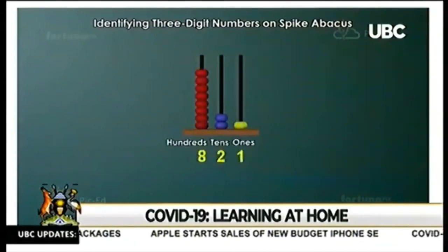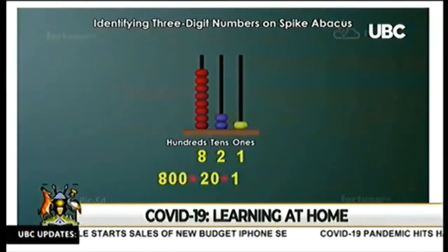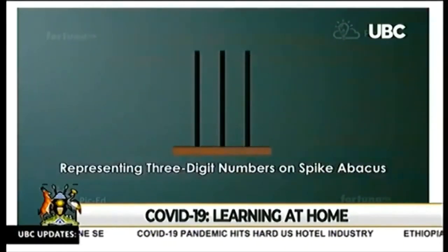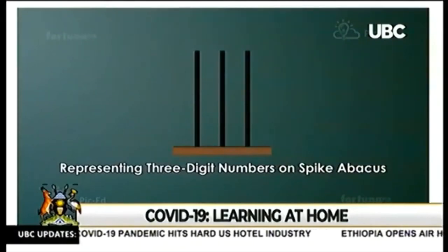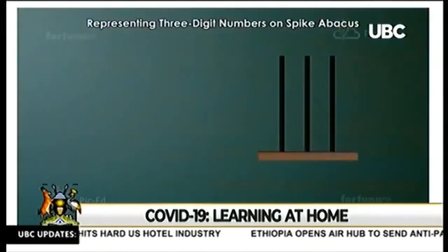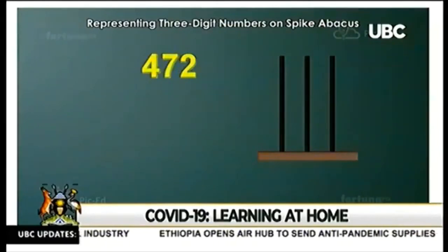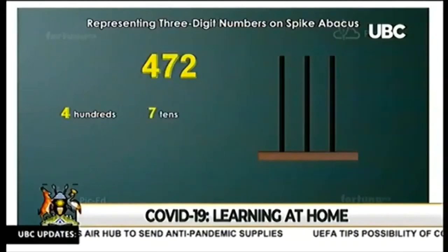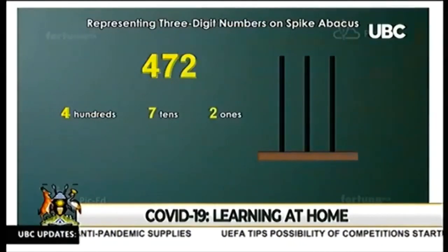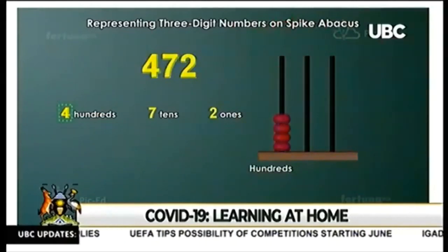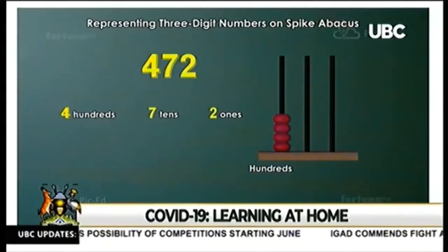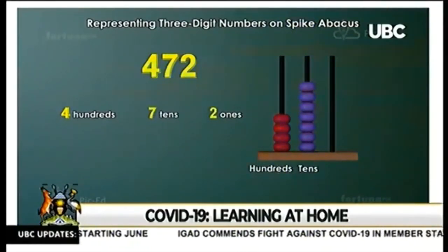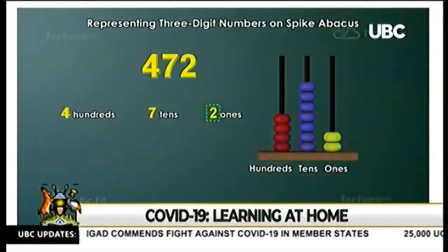Likewise, the number represented by this spike abacus is 821. Let's try to represent a 3-digit number on our spike abacus. We'll use the number 472. The digit 4 represents 4 hundreds, 7 represents 7 tens, and 2 represents 2 ones. So we'll put 4 beads on the 100 spike to represent 4 hundreds, 7 beads on the 10 spike to represent 7 tens, and 2 beads on the 1 spike for 2 ones.